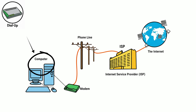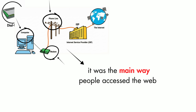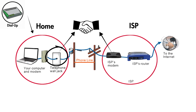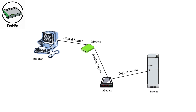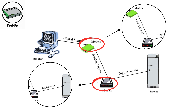Dial-Up connects the computer to the Internet using a modem and a standard telephone line. The computer's modem plugs into the phone jack, it dials the ISP's number, and both modems perform a handshake, exchanging analog tones to agree on connection settings. The modem turns digital data into analog audio for the phone line, while the ISP turns it back into digital data.